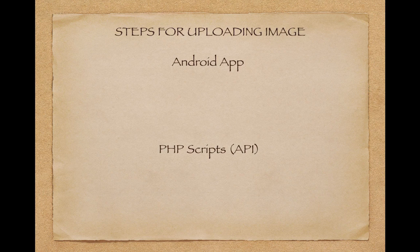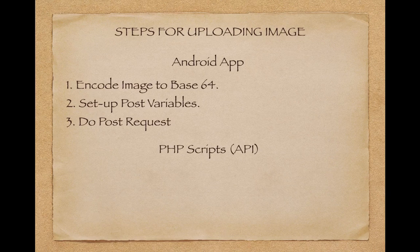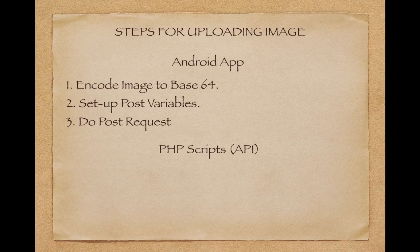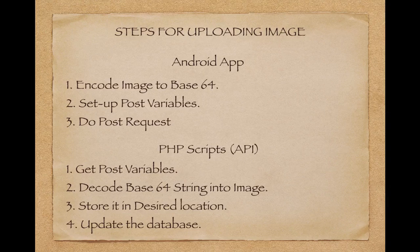We have two components: an Android app and a PHP script which is an API. The steps in the Android app are: first encode the image to a base64 string, then set up the POST variables, and then initiate an asynchronous POST request to the PHP script. In the PHP script, we'll get the POST variables, decode the base64 string back into the image, store it in the desired location (the images folder), and update the image column in the customer table.